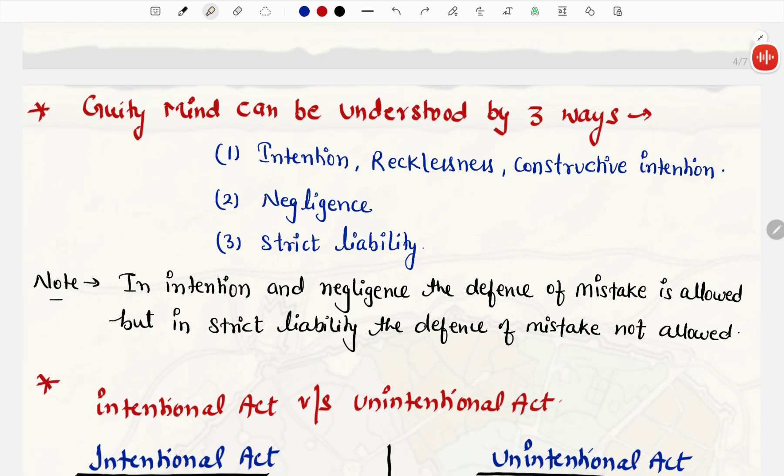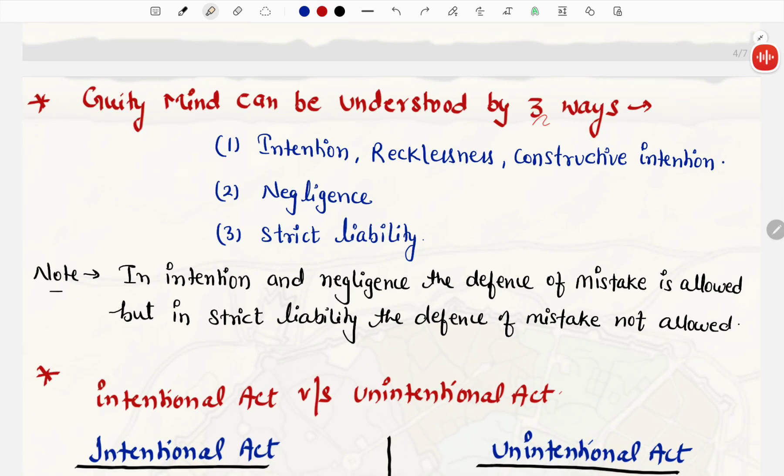Next, guilty mind can be understood by three ways. Guilty mind ko samajhne ke bhi teen tariqe hai. First is the intention, jisko kehte hai recklessness, constructive intention. Doosra method hai, negligence. And third hai, strict liability.